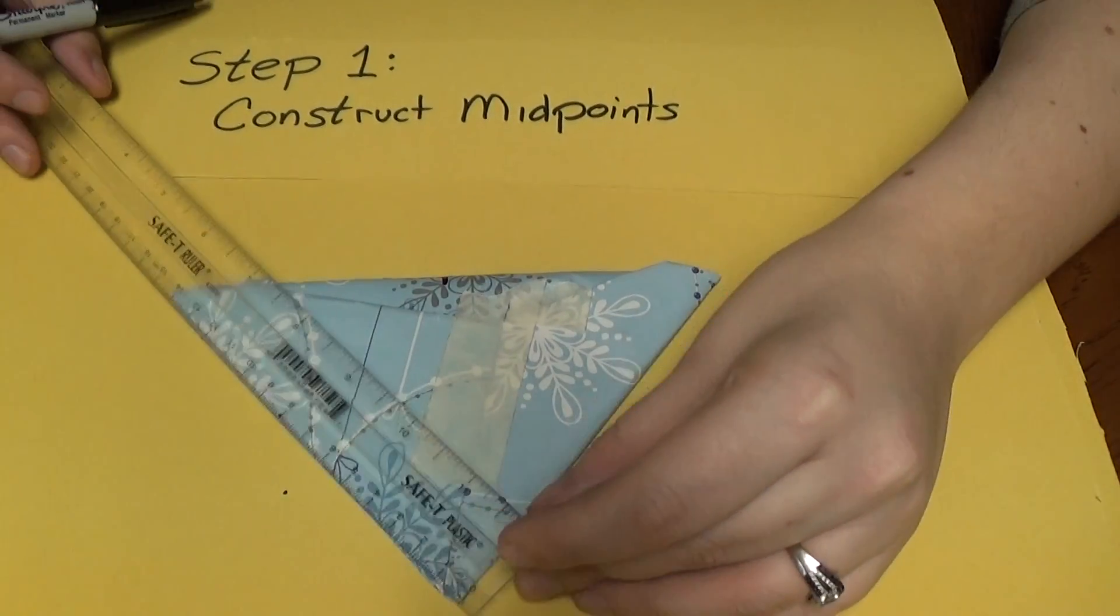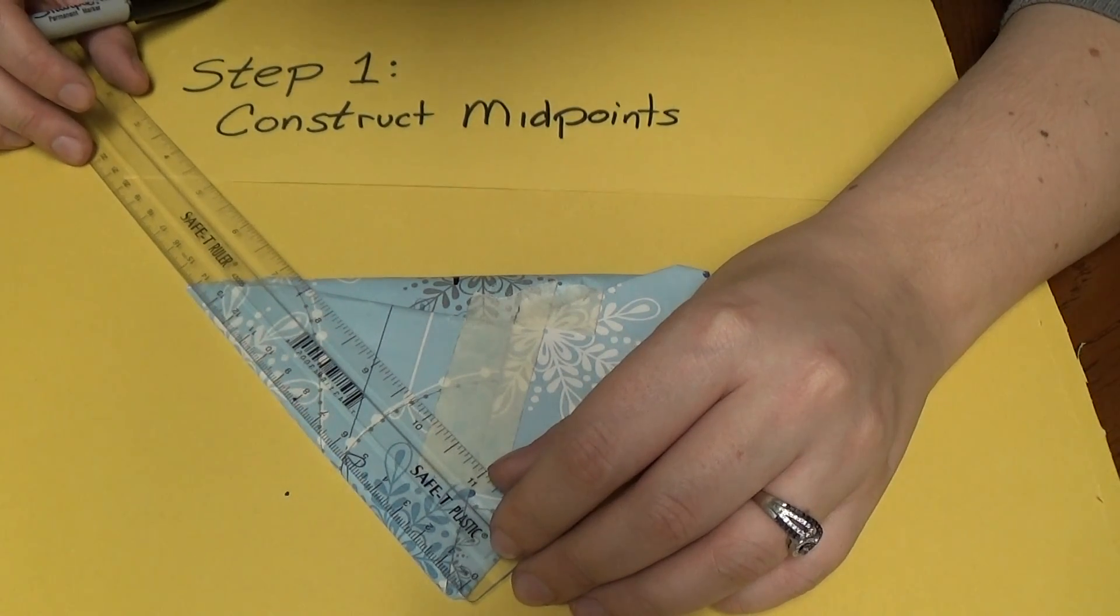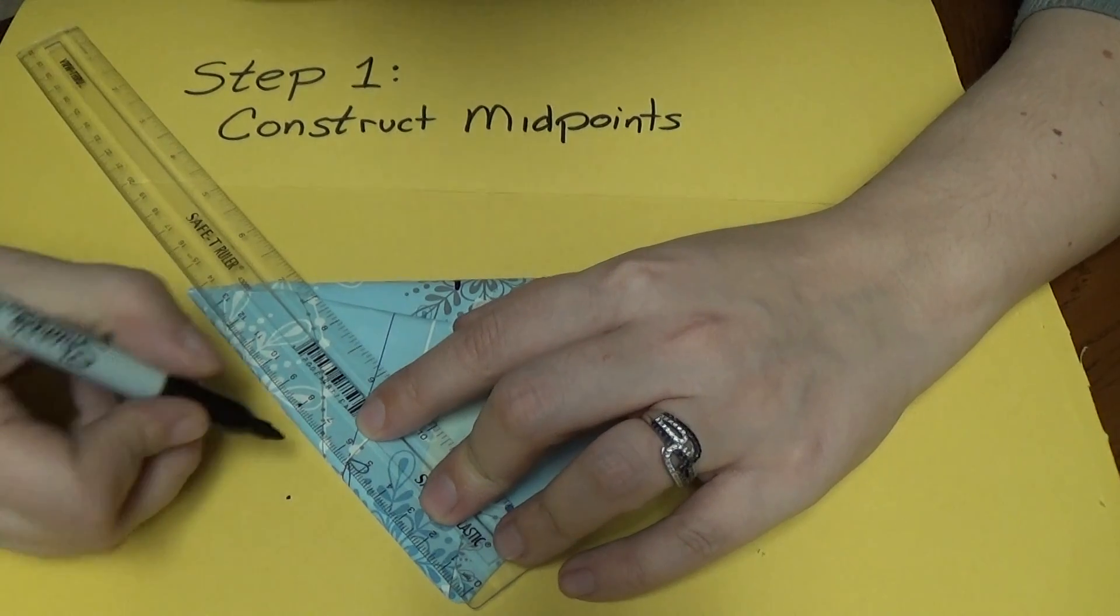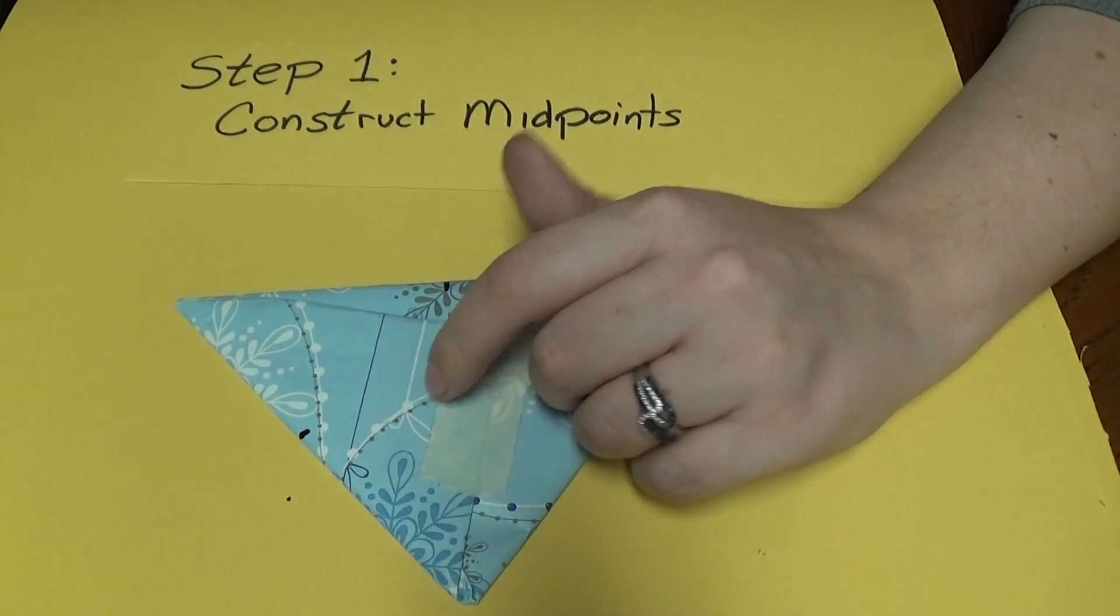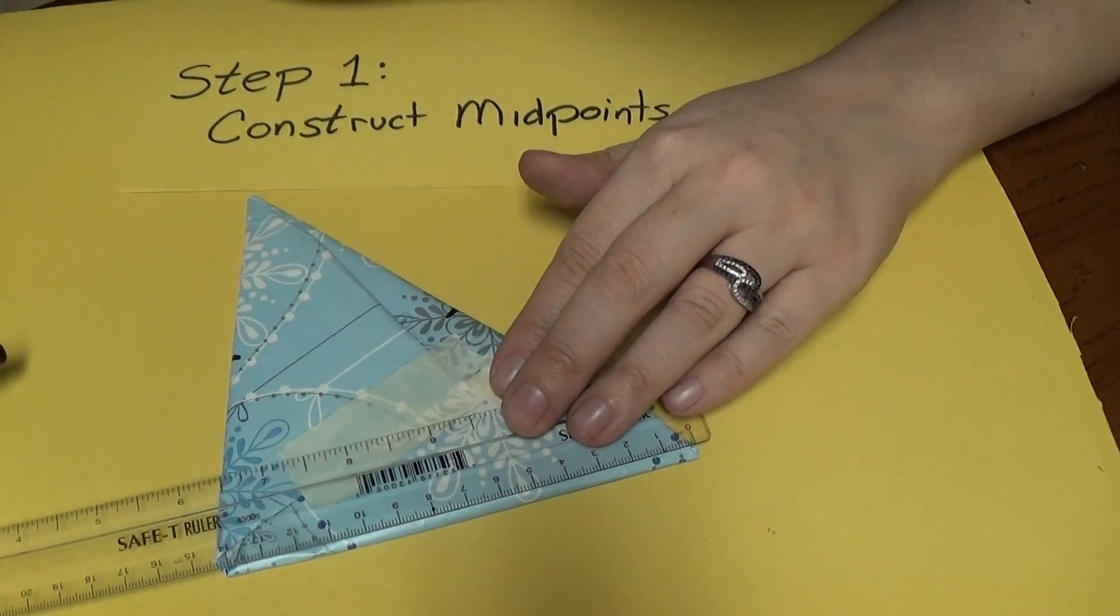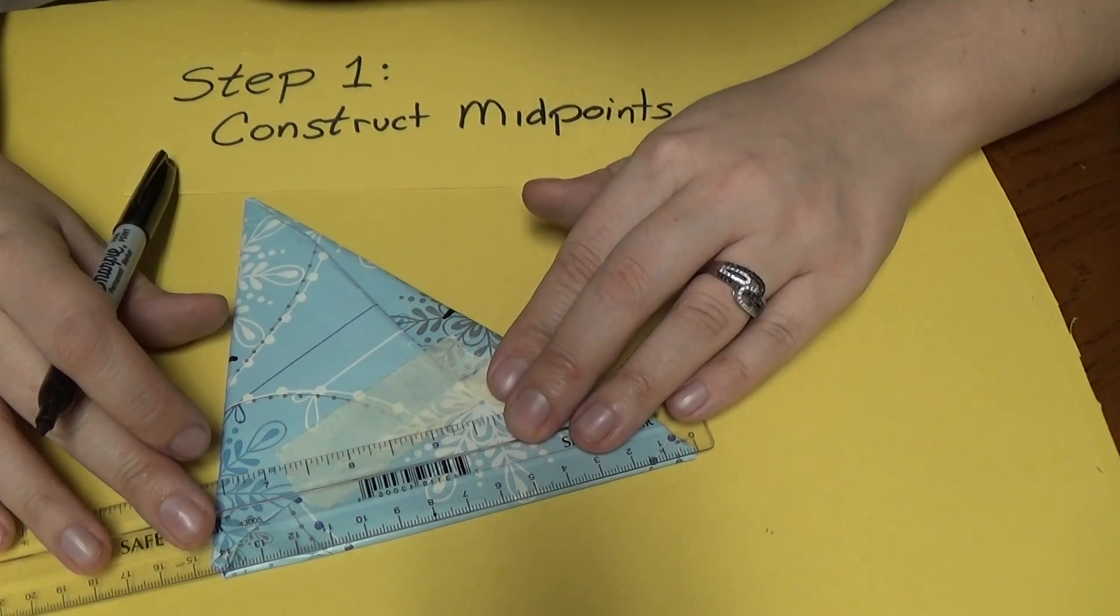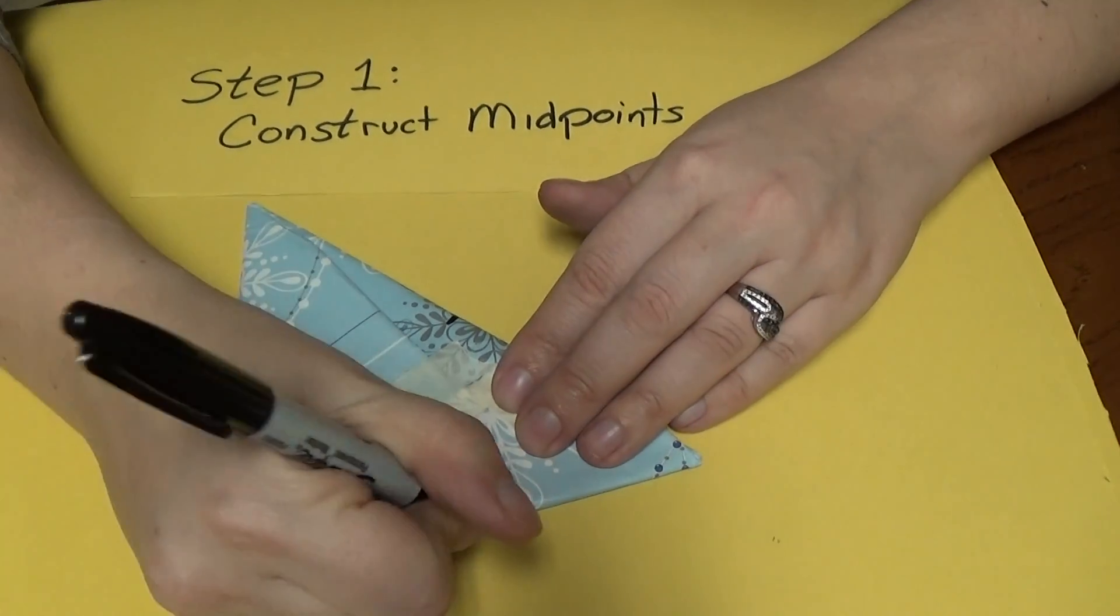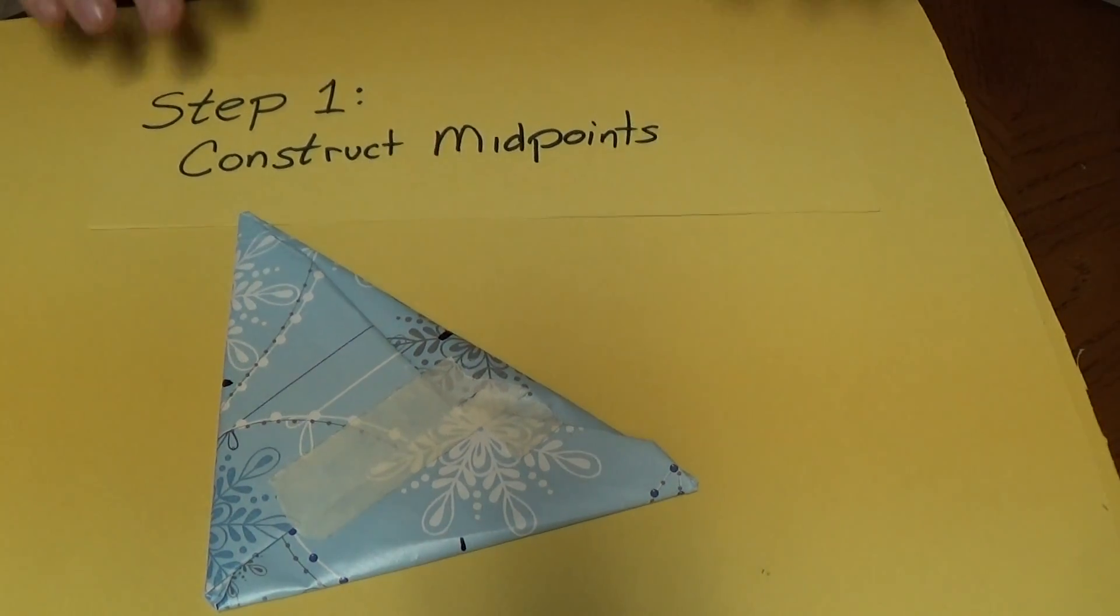Then the other two sides. This side length over here is 14.6. 14.6 divided by 2 is 7.3. So get over here to 7, 1, 2, 3. Make a little mark right there. And do it again for the third and final side. From end to end this is 14.2 centimeters. So 14.2 divided by 2 is 7.1. Go to 7.1. Make a little mark. Alright. That is step one. We have all of our midpoints.